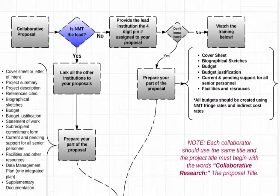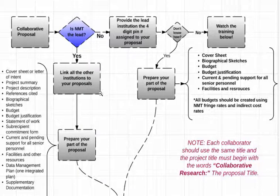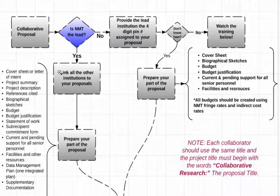Now, if we are the lead institution, you need to link all the other institutions and their proposals to your proposal. You need to ask the other folks to send you their PIN number so you can link them. There will be a short video below this video showing you how to link the other proposals to yours when we are the lead institution.